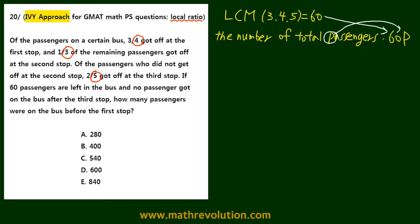Alright, let's move on to our question. On the first stop, three-fourths of the passengers got off. So 60p times three-fourths - if we divide by 4, you get 15, then 15 times 3 is 45. On the first stop, 45p got off, and therefore the remaining passengers on the bus is 60p minus 45p, which is 15p.